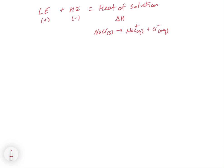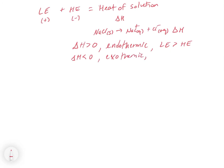We have a balancing act where lattice energy (positive, endothermic) plus hydration energy (negative, exothermic) equals the heat of solution — the delta H for NaCl solid going to Na⁺ aqueous plus Cl⁻ aqueous. We must both break apart the ions and then hydrate them. Combining these via Hess's law gives the heat of solution. If delta H is greater than zero, the process is endothermic — the solution cools down, meaning lattice energy exceeded hydration energy. If delta H is less than zero and exothermic, the hydration energy was greater than the lattice energy.